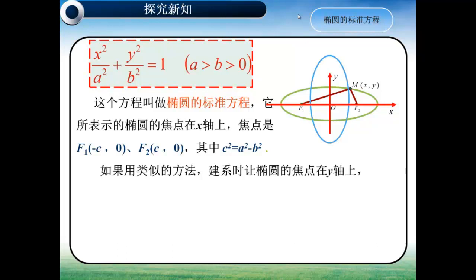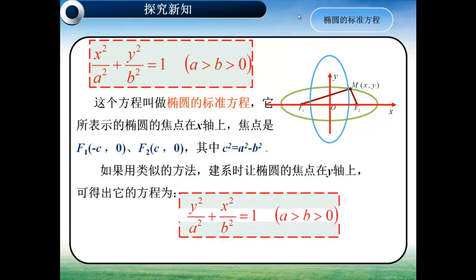我们可以用类似的方法，进行推导将椭圆的焦点设在Y轴上，可得出它的方程为Y²/A²加X²/B²等于1，其中A大于B大于0。注意观察这两个方程的区别是：当焦点在哪个轴时，底下的分母就是A²。